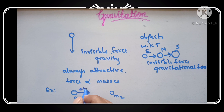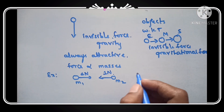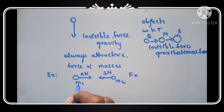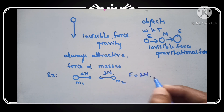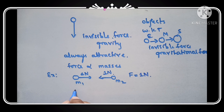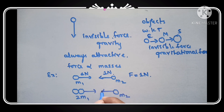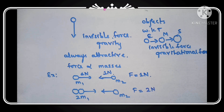The particle of mass M1 and the particle of mass M2, which is having a force of 1 Newton. Now if you add masses — that is 2M1 and M2 — what is the value of force? Force is equal to the product of masses, means 2 into 1 is 2, so 2 Newton. So 2M1 into M2 gives 2N, that is the force acting here.